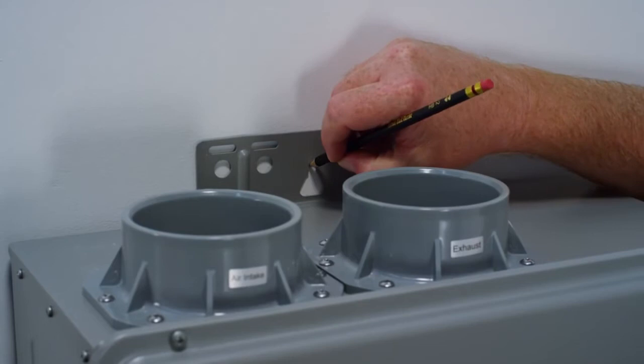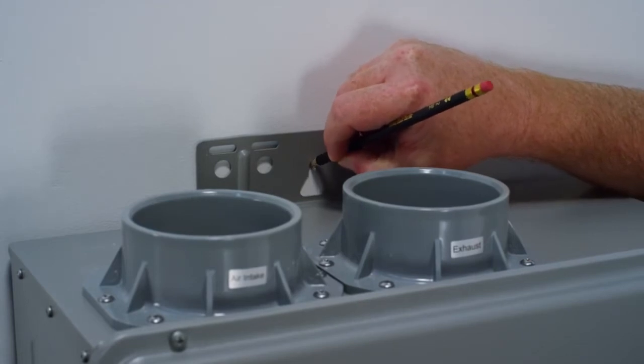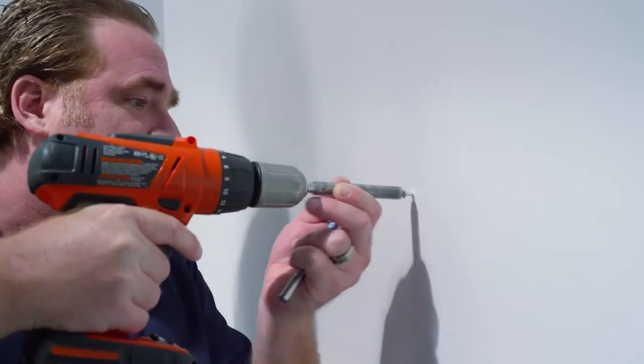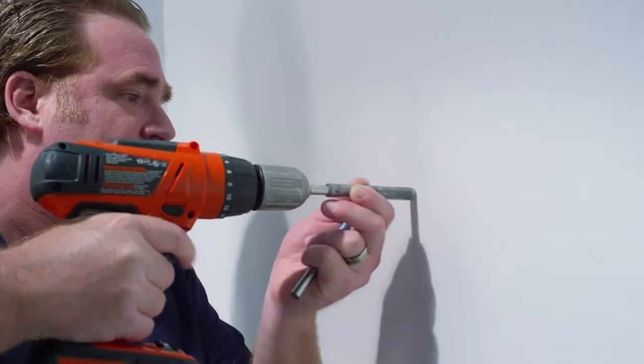Using the easy hang slot on the bracket already mounted to the water heater, mark the center line of the water heater and install one screw for the top hanging bracket.